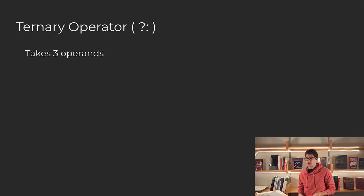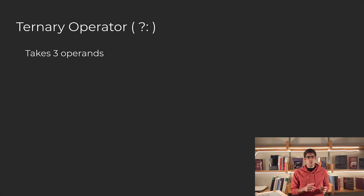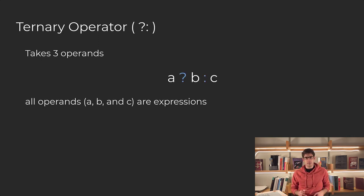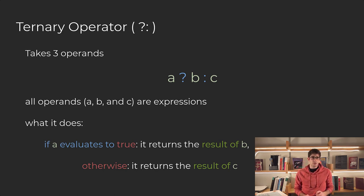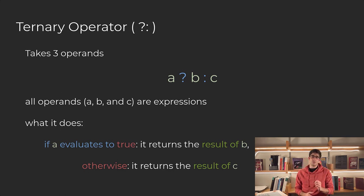Lastly, I want to cover conditional expressions — more specifically, expressions using the ternary operator. The ternary operator uses three operands, and we say the ternary operator because there's only one: the question mark colon operator. What this does is take in three expressions. It checks if the first expression evaluates to true or false — if the first expression evaluates to true, we return the result from the second expression, and if it evaluates to false, we return the result of the third expression.